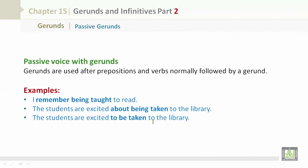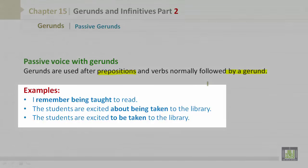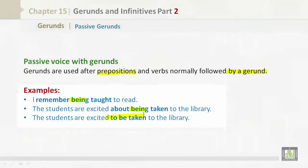Now, passive gerunds. Passive voice with gerunds. Gerunds are used after prepositions and verbs normally followed by a gerund. For example, I remember being taught to read. The students are excited about being taken to the library. The students are excited to be taken to the library.